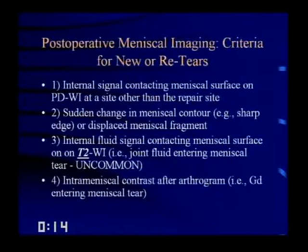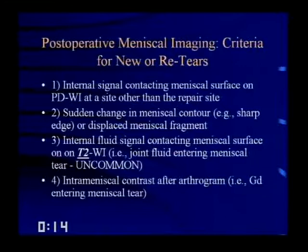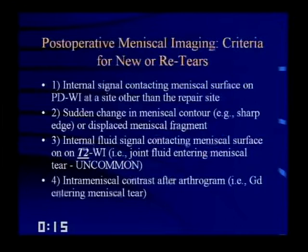Criteria for new tears or re-tears include: internal signal contacting the meniscal surface at a site other than the repair site on proton density-weighted images; a sudden change in meniscal contour or sharp edge; a displaced meniscal fragment; and internal fluid signal contacting the meniscal surface on T2-weighted images, indicating joint fluid entering the tear. Intra-meniscal contrast after arthrogram — gadolinium entering the tear — also indicates a tear. You shouldn't see fluid signal within even a healing tear.